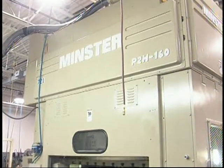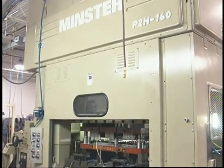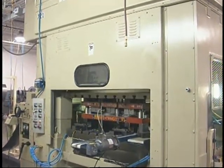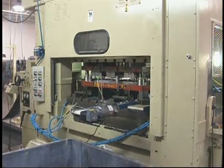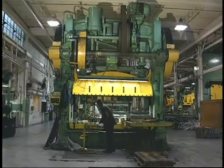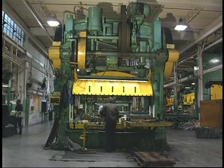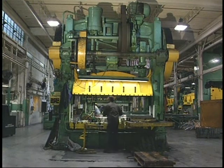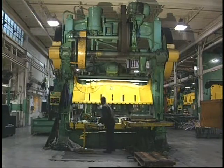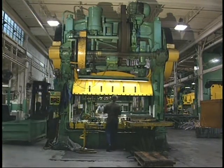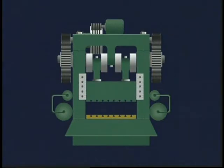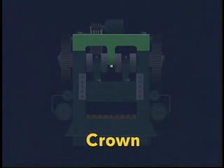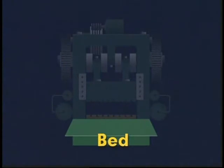Straight side presses derive their name from the vertical columns or uprights located on either side of the machine. The housing or frame of most straight side presses is held together in compression by pre-stressed tie rods, although some straight side presses have solid frames. Angular deflection during stamping is not an issue with straight side presses, which often improves dimensional accuracy of stamped parts and reduces die maintenance. The main structural components include the crown, the columns, bed, and bolster.